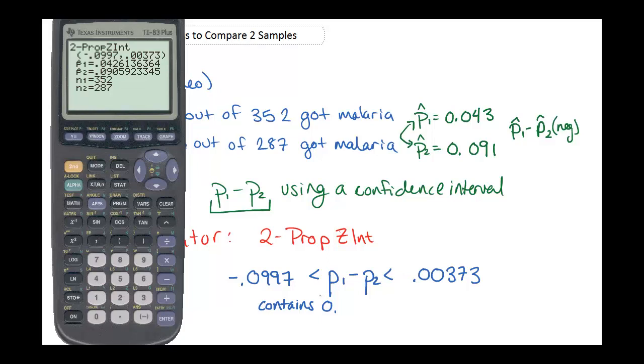What that's telling us is that at the 99% confidence level, there is a possibility that p1 minus p2 could be 0. Or in other words, it's possible that these two proportions are the same.